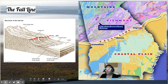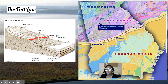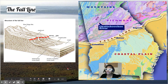The fall line runs from Augusta all the way through Macon and into Columbus. So next time you're traveling south and you get to Macon, look out your window and notice how the landscape goes from those rolling hills down to something flat. You can say, 'We just passed the fall line and we're in the coastal plain!'